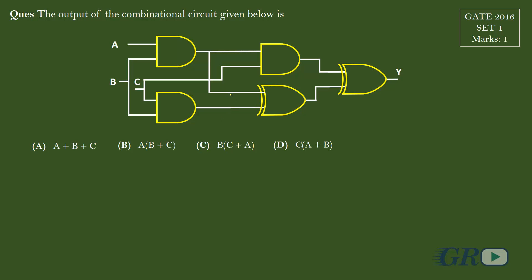This question was asked for one mark in GATE 2016. It's a straightforward question where we have been given a combinational circuit with three inputs A, B, C, and we have to identify the output function Y.